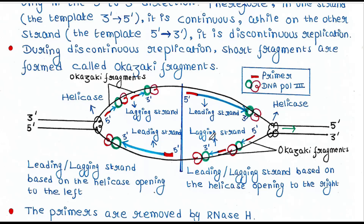But a problem occurs on the other strand. Here, the helicase is also moving in this direction, but DNA gets polymerized only in the 5' to 3' direction. That means the direction of helicase movement and DNA polymerization are opposite. That's why replication is discontinuous here — helicase opens a new portion and short fragments called Okazaki fragments are formed. This strand is known as the lagging strand because replication is discontinuous.